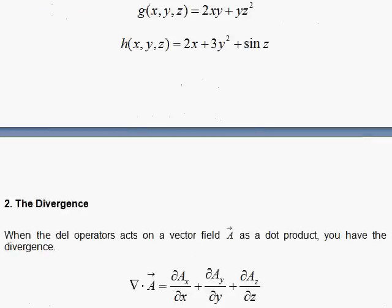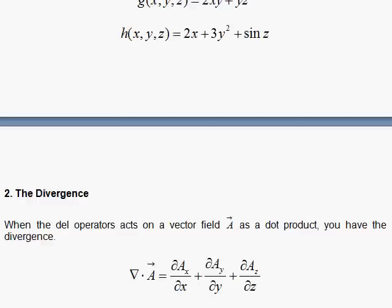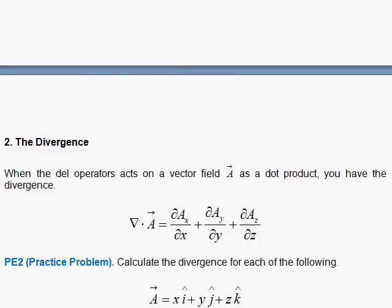Another thing we can do is the divergence. We already have seen this. Here, the vector operator operates as a dot product on a vector, and you get a scalar.